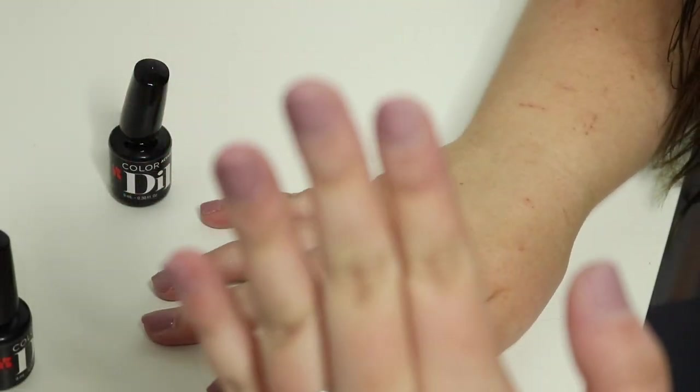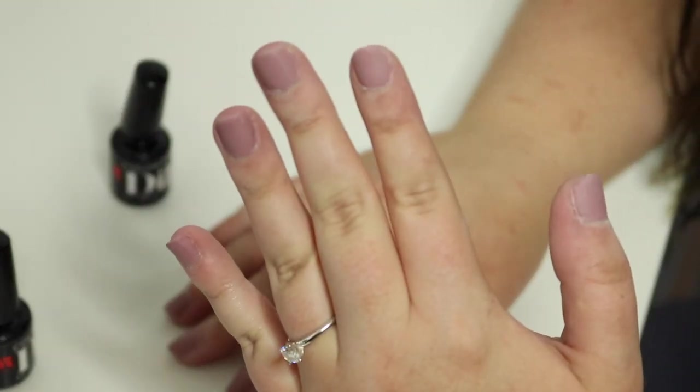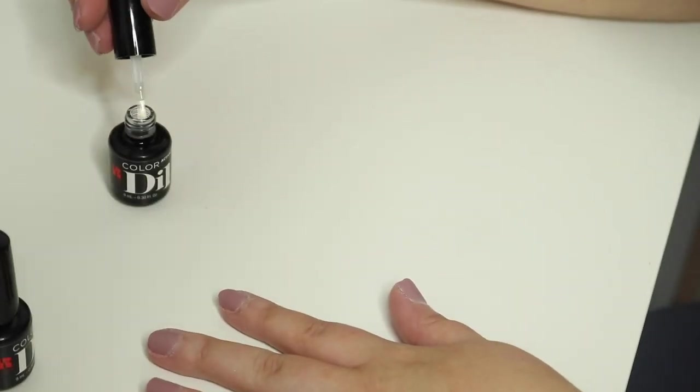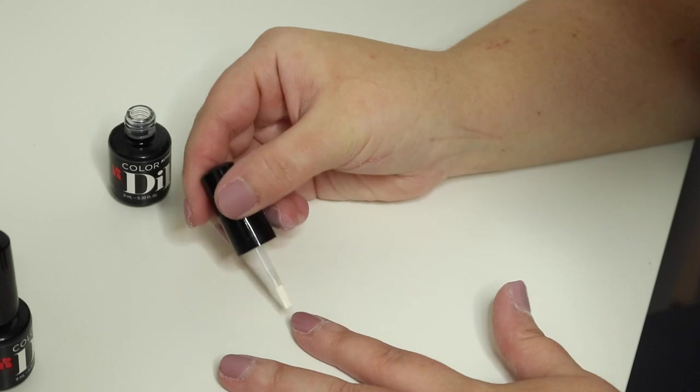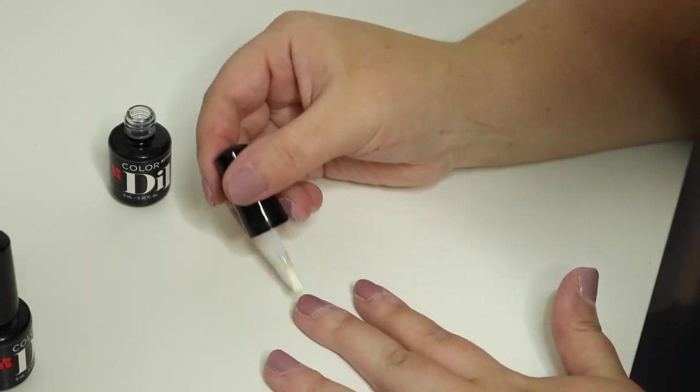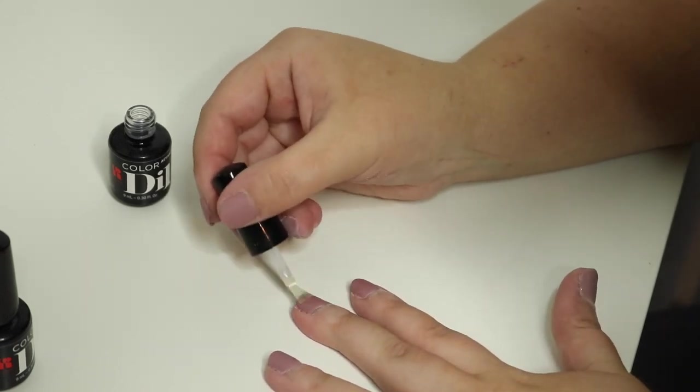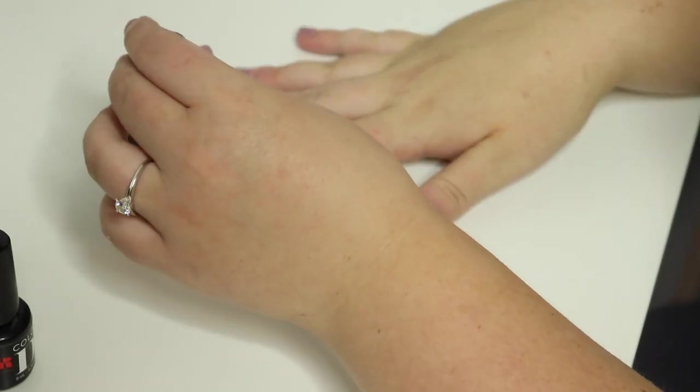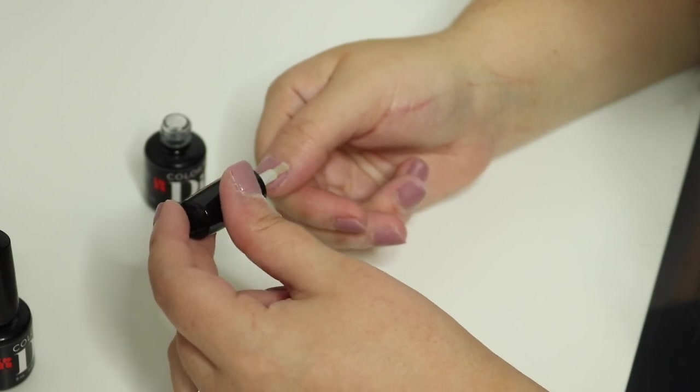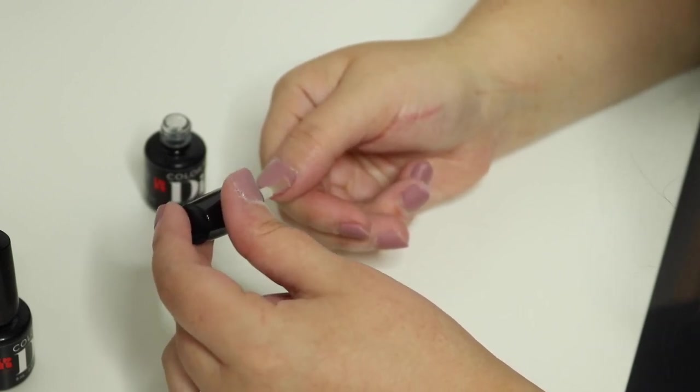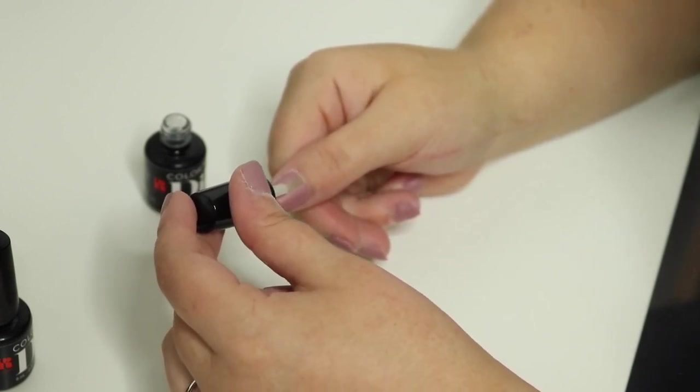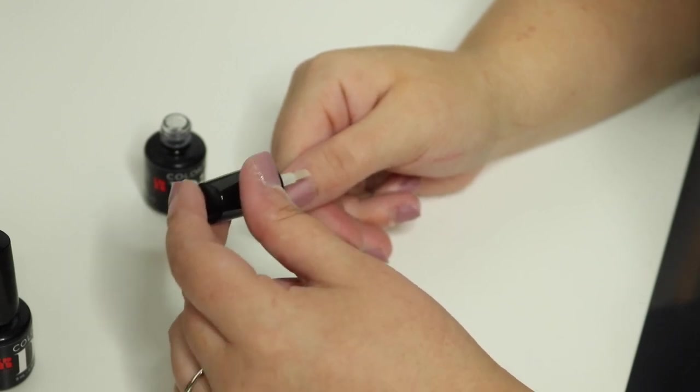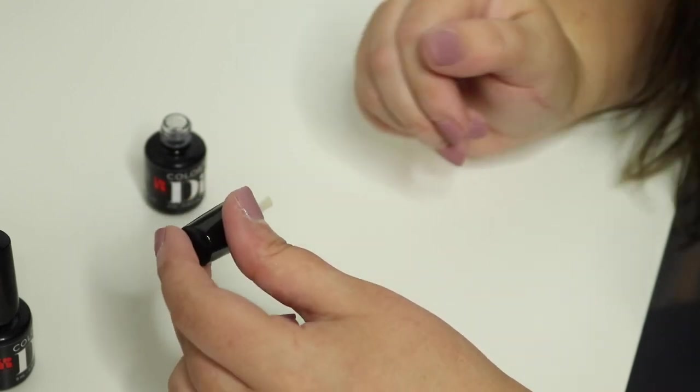And now once they are all matte and looking smooth, you're going to put one more coat of the activator on. They're already very hard, but this is going to be the final step. Avoid getting the activator on any wounds or open cuts if you got them next to your nail. It burns.